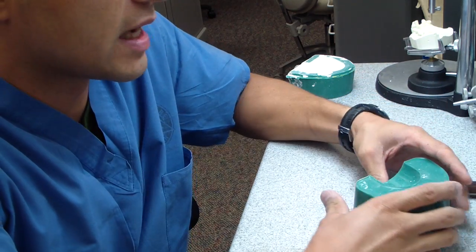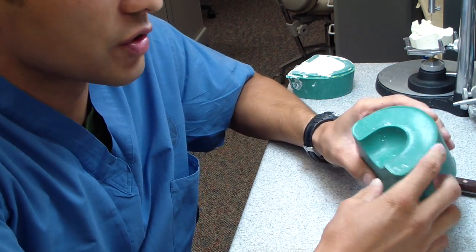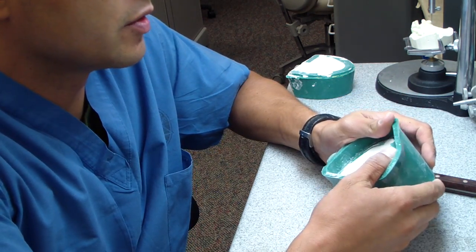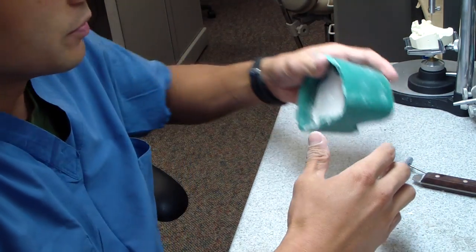show you. So the last time you saw this, I was just pouring up the polyvinyl siloxane. Remember, this is typically what we use here to duplicate casts.